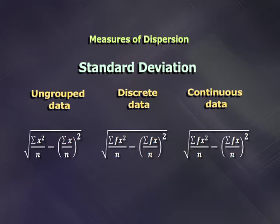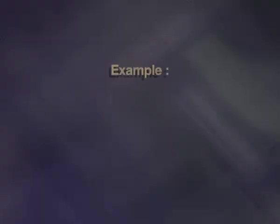For continuous data, x will be the mid-value of the classes that are given, while in the case of discrete data, x represents the actual observation. There are many more formulas that can be derived for mean deviation and standard deviation. Let us understand all these measures through an example.